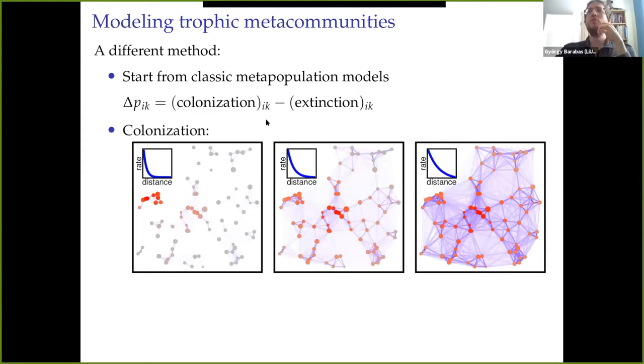Colonization, we do pretty much the standard stuff. We have a landscape. These are the patches of the landscape. And we have what we call a dispersal kernel, a functional form that looks like this, which tells you the rate of dispersal between two patches, depending on how far they are from one another. If the patches are closer up, then there's more dispersal in between them. If they're farther off, there's very little.